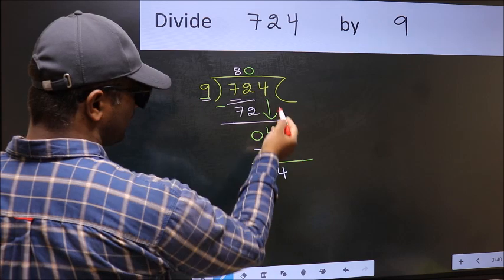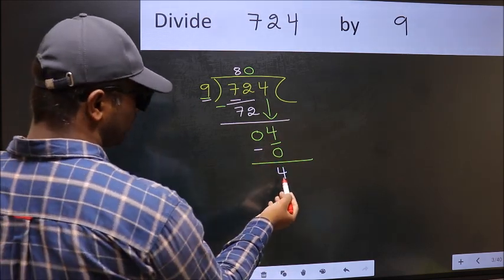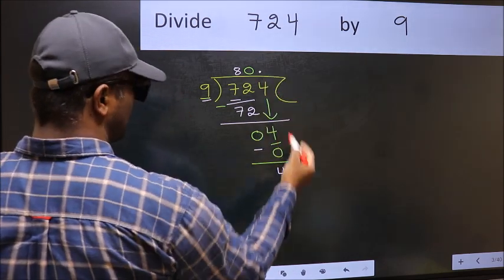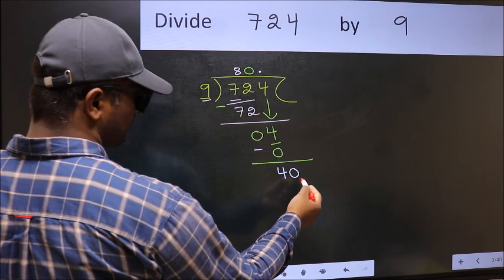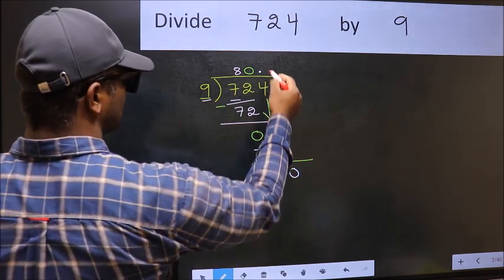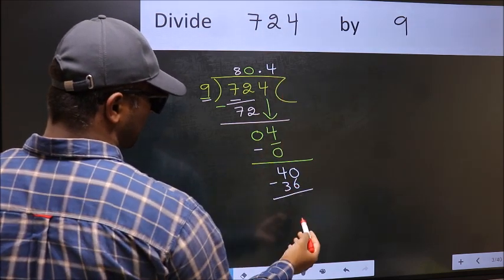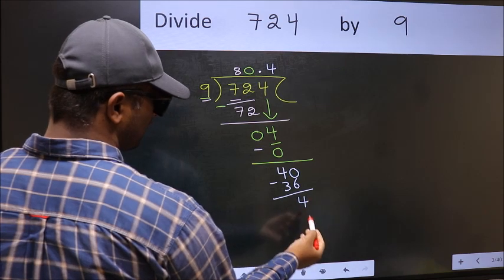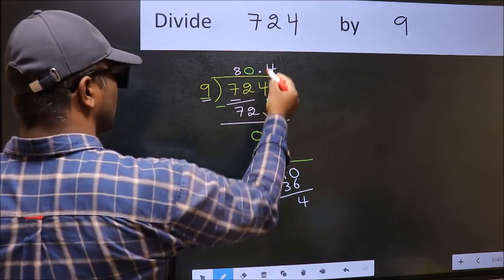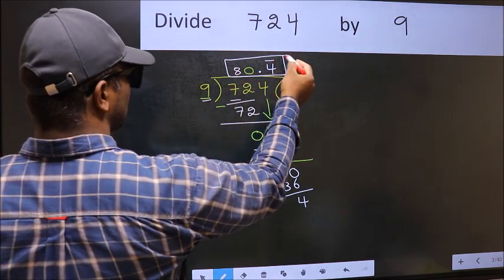Over here, we did not bring any number down, and 4 is smaller than 9. We get 4 again. That means we get bar on this number. So this is our quotient.